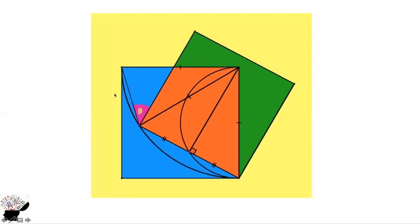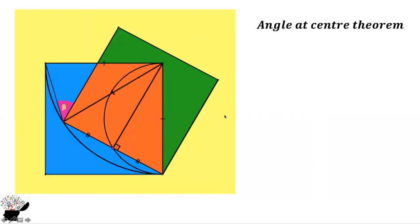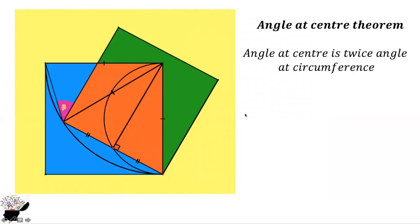Now that we have the quarter circle, we can use the central angle theorem: the angle at the center is twice the angle at the circumference. This point is on the circumference. We know this side to be 90 degrees already, but we don't know beta. So we use the central angle theorem — the angle at the center is twice the angle at the circumference.